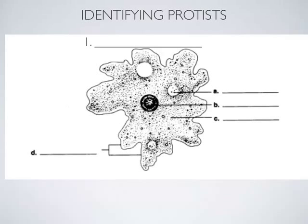We'll cover the parts that you need to know, and then hopefully Thursday we'll be able to see them under the microscope. So first off, what type of protist is this? It's an amoeba — an amoeboid. An amoeba is a protist that moves using its cytoplasm, which streams forward and sort of lobs along. Parts of the amoeba are fairly simple.